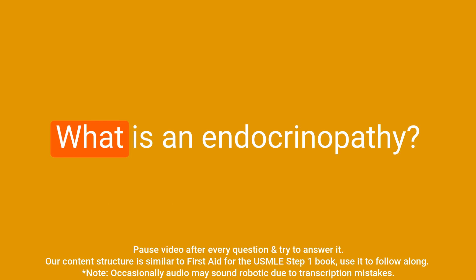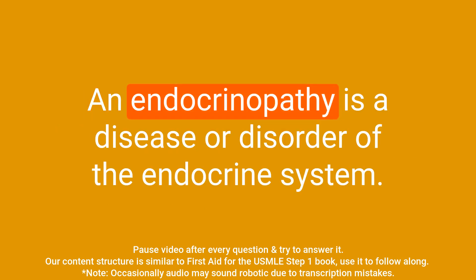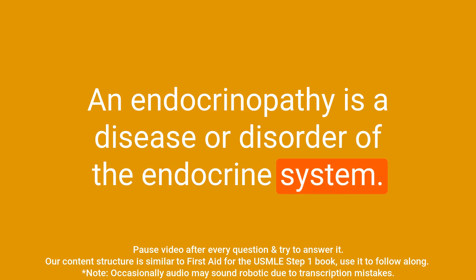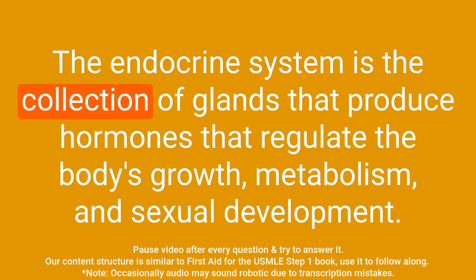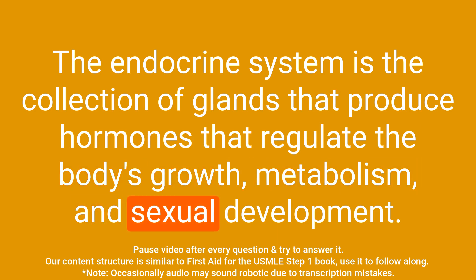Question: What is an endocrinopathy? Answer: An endocrinopathy is a disease or disorder of the endocrine system. The endocrine system is the collection of glands that produce hormones that regulate the body's growth, metabolism, and sexual development.